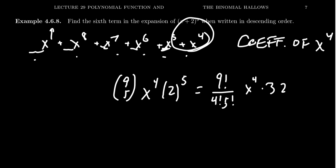5! is going to go into 9!, leaving 9 times 8 times 7 times 6 - four terms. Over 4!, you get 4 times 3 times 2. 3 and 2 comes together as 6, so that cancels out. 4 goes into 8 two times. There's still the 32x^4 right there.